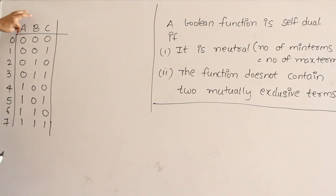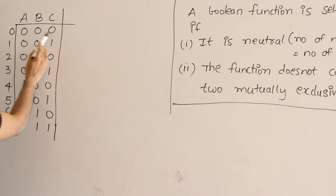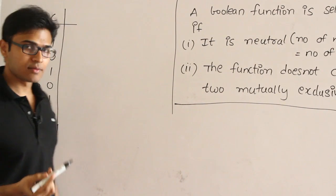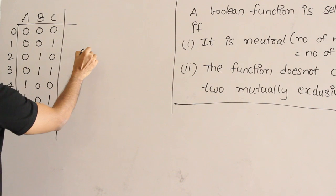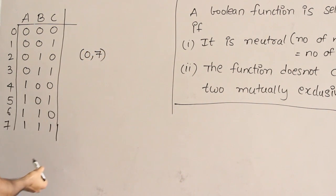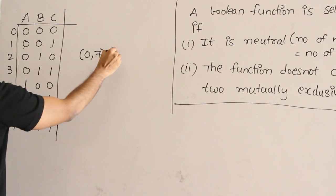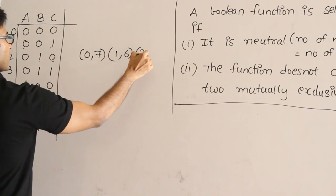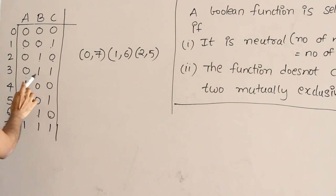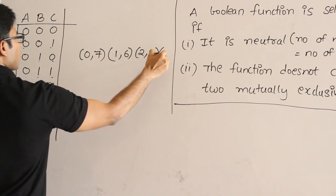Now check minterm 0, which means 000. What is the mutual exclusive term for that? The mutual exclusive term is 111, which is minterm 7. So I keep them as a pair: (0, 7). These two are mutually exclusive. Similarly, 001 pairs with 110, giving pair (1, 6). And 010 pairs with 101, giving pair (2, 5). And 011 pairs with 100, giving pair (3, 4).